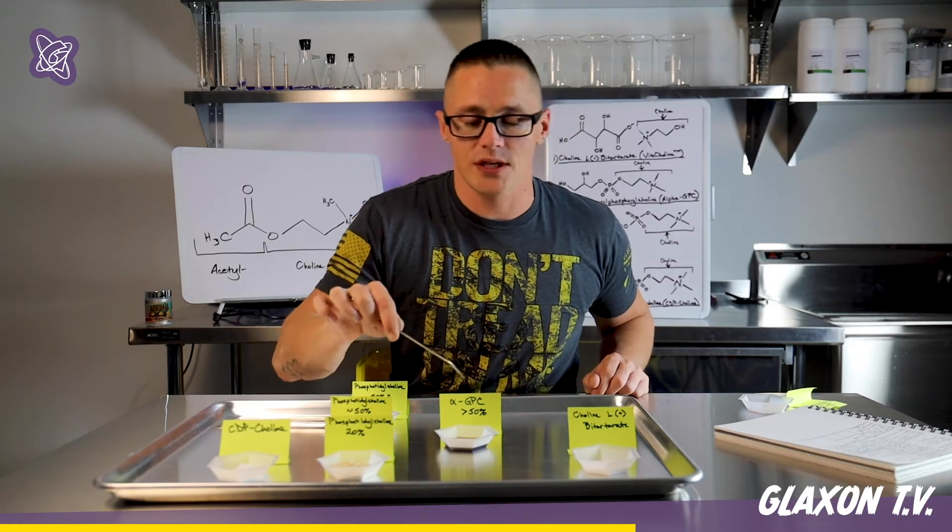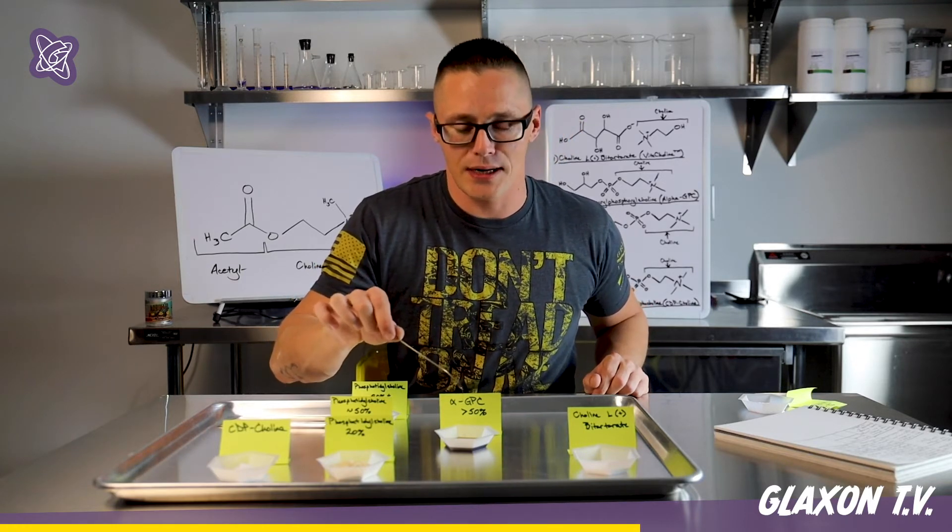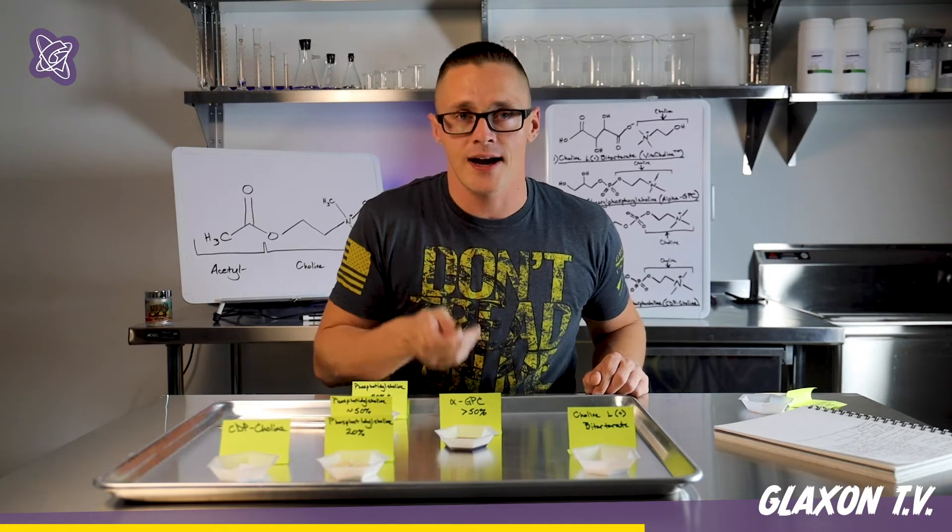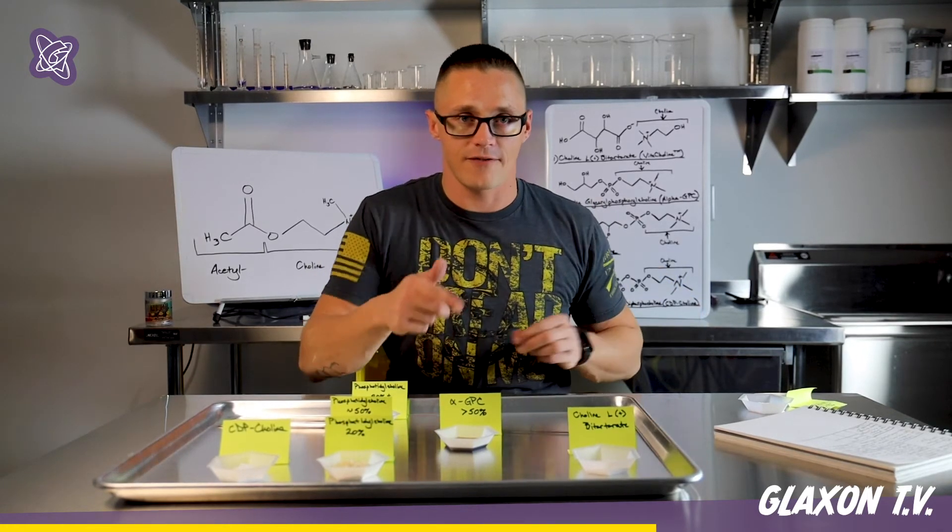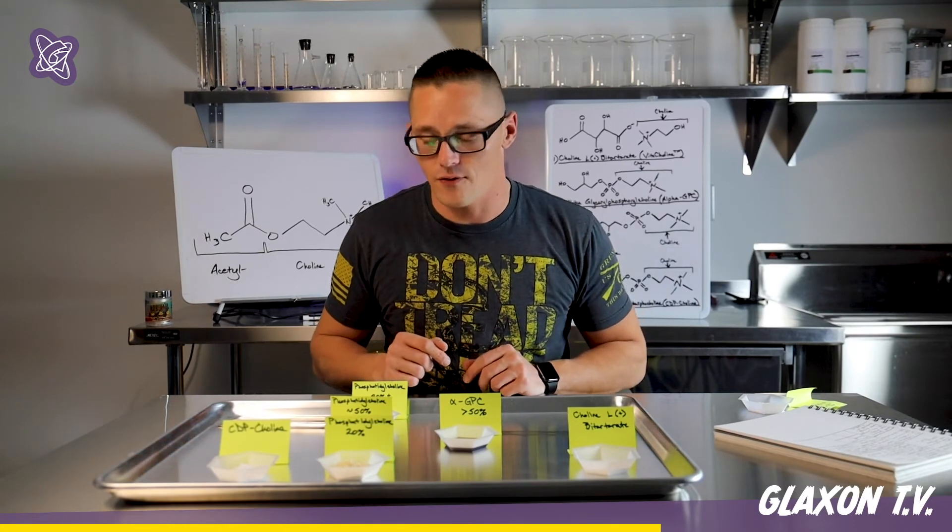If you do get an alpha-GPC that is of sufficient quantity, say it is 99% or something remarkable like that, then it's probably going to be in a soft gel. So for those of you shopping for good choline, if you're going to find the 99%, it's going to be in a liquid form.